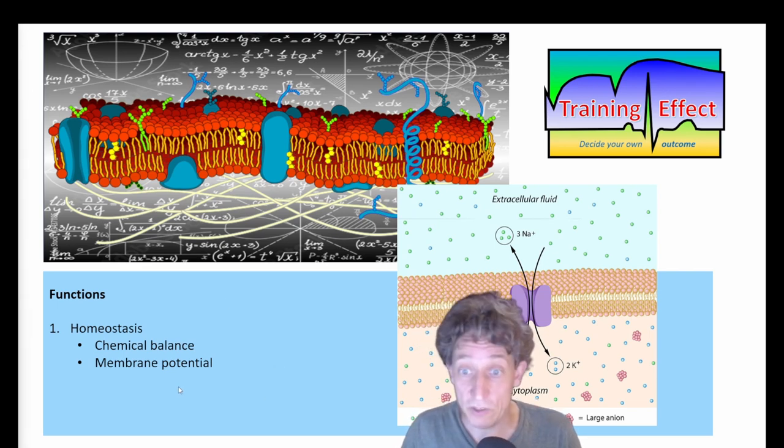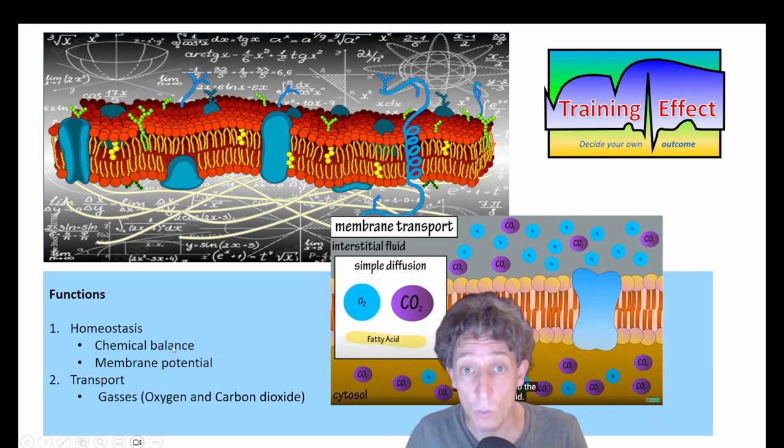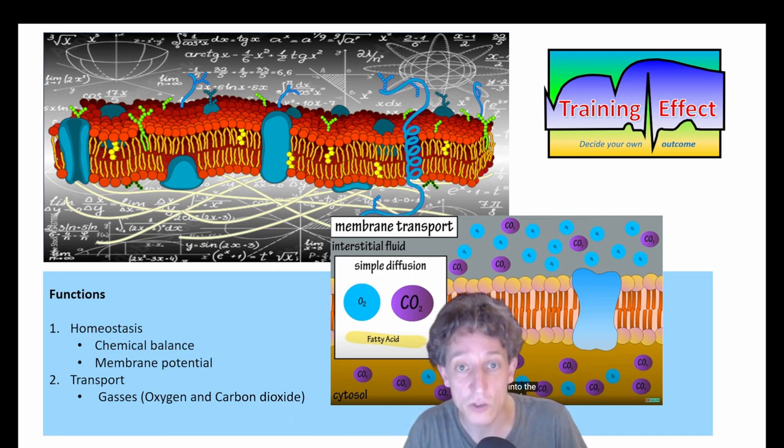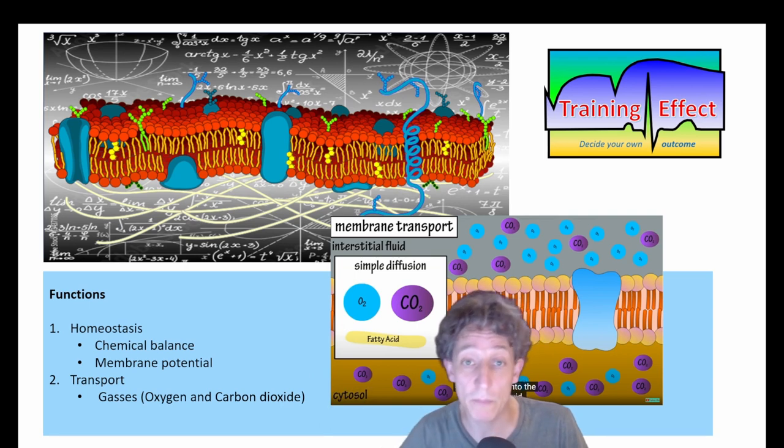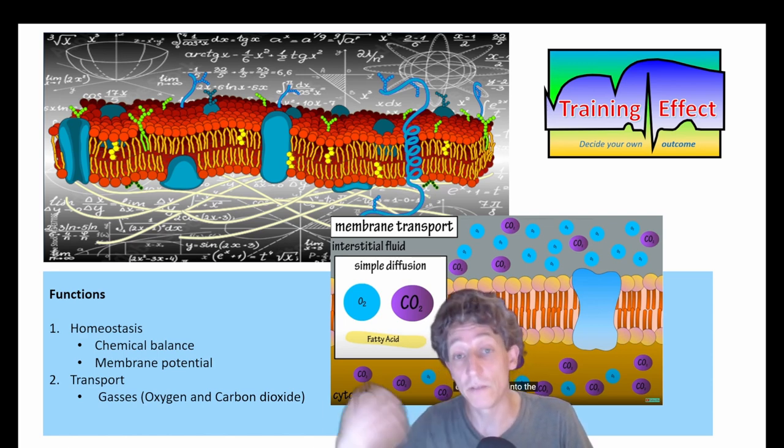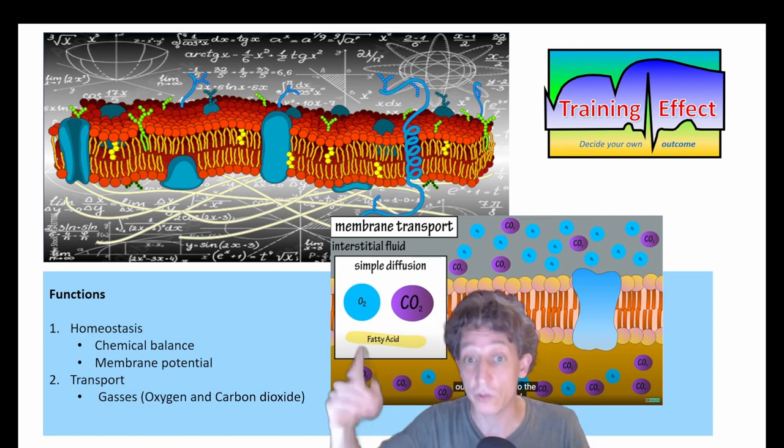So that is the homeostasis part. And what we also want to know is that there are a lot of parts that can just go through this membrane, like oxygen that is needed to create energy that we burn, sugars, fatty acids and things like that. But also the production of CO2 and the release of that is also going through this membrane.